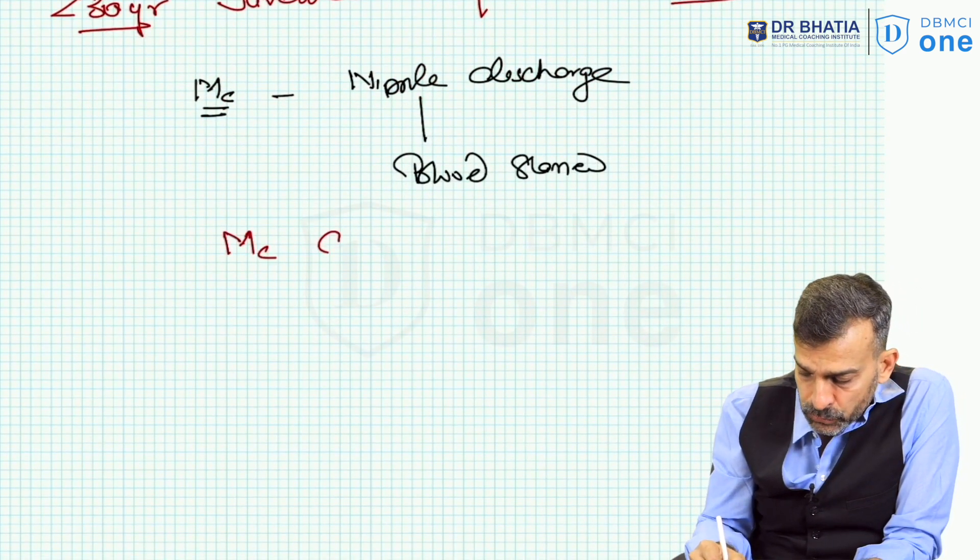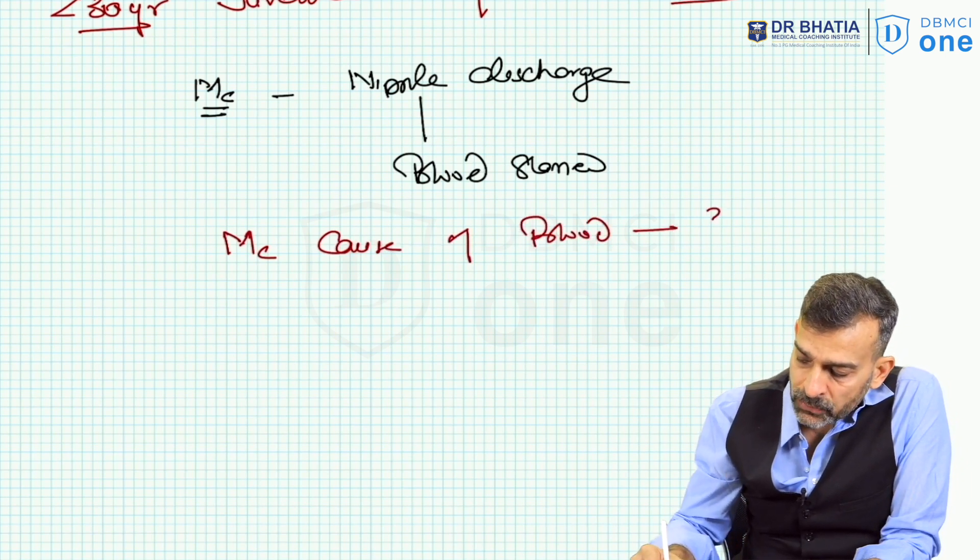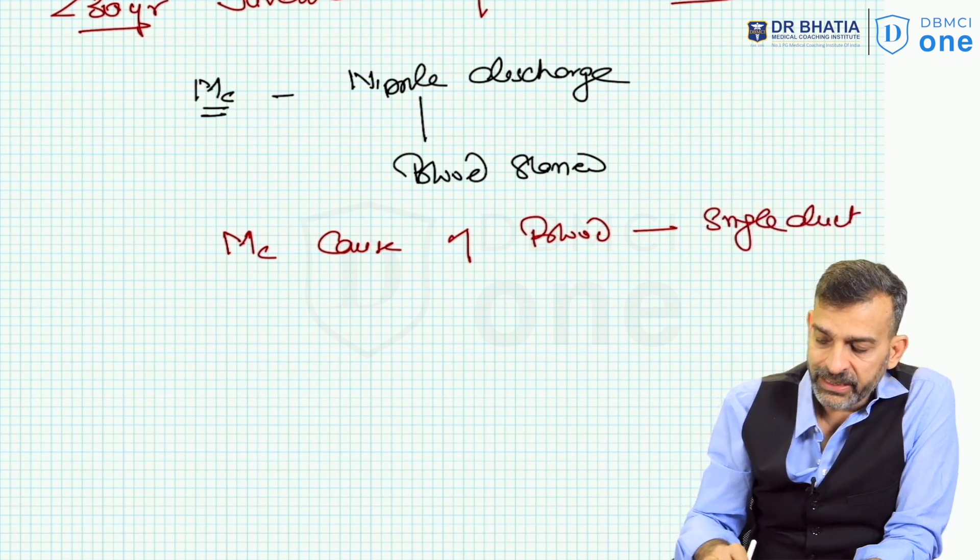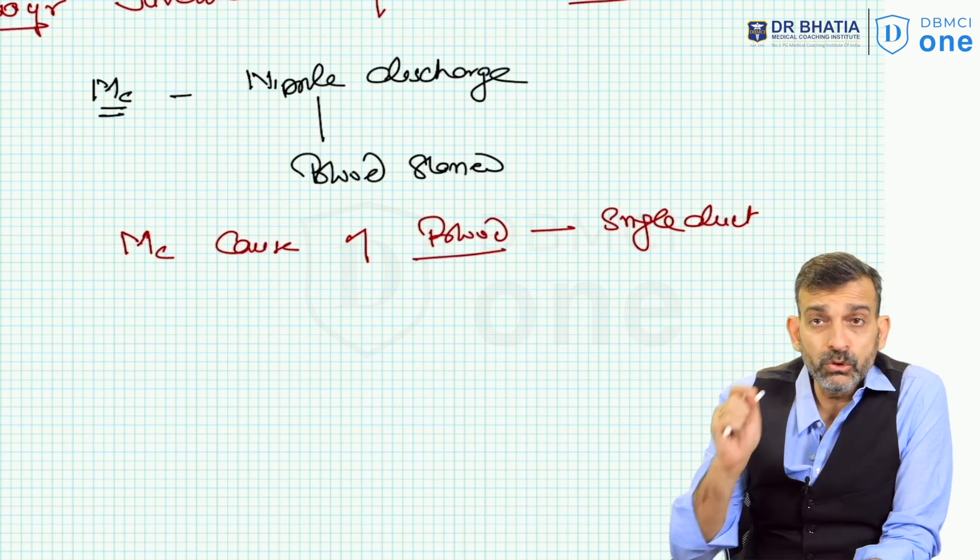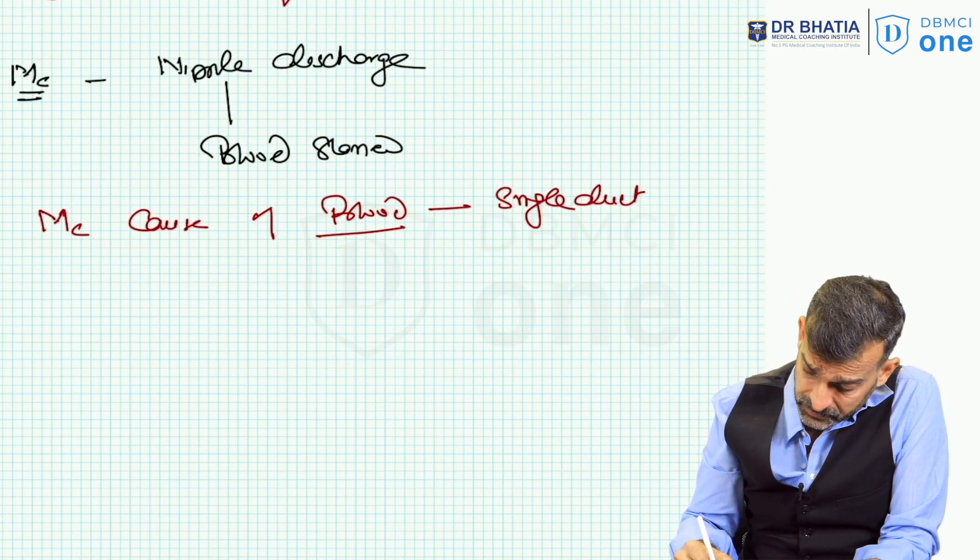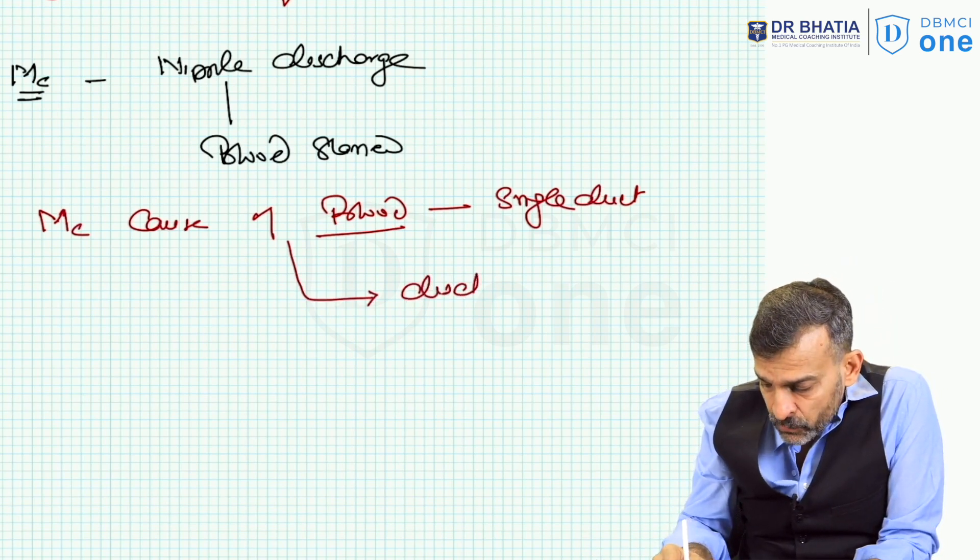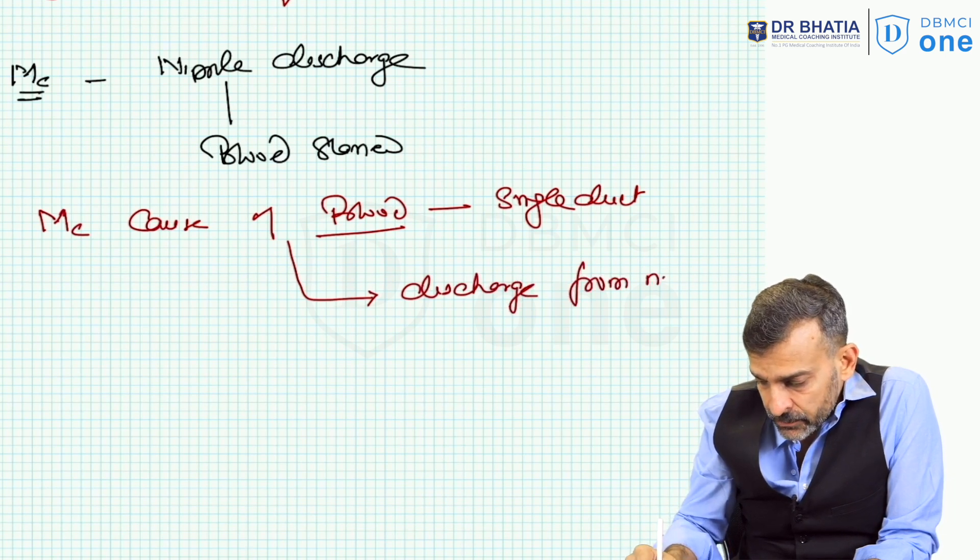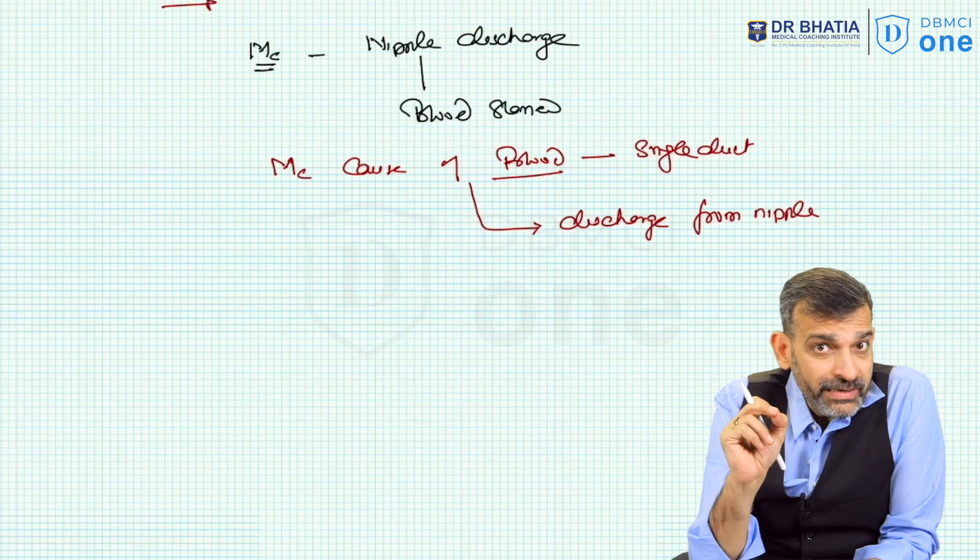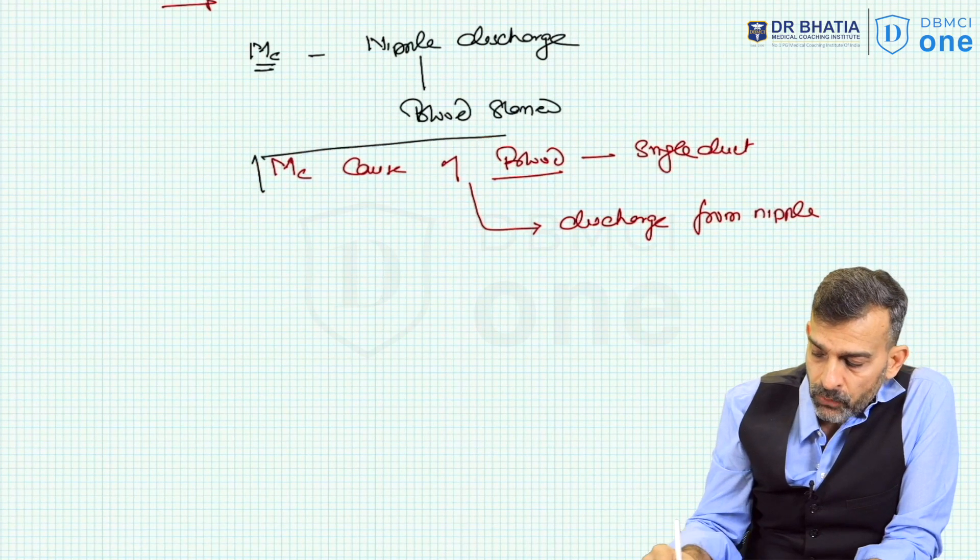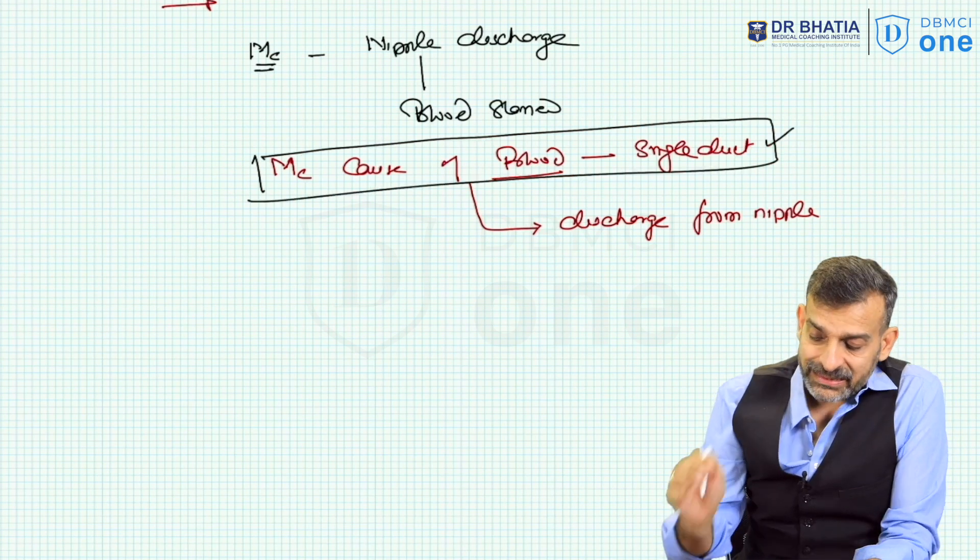It is blood-stained discharge. And remember, intraductal papilloma is the most common cause of blood-stained discharge from single duct. And please, further highlight it in your notes, the theoretical point. Intraductal papilloma is not only the most common cause of blood-stained discharge from a single duct. It is also the most common cause of blood-stained discharge from a nipple even. And you can easily appreciate, very important point to be observed in this what I have written.